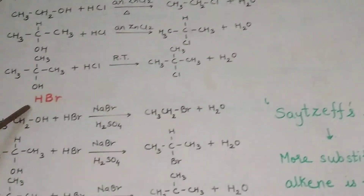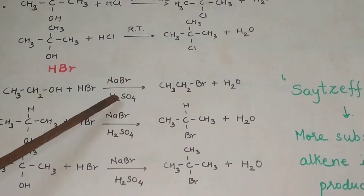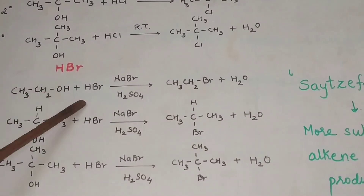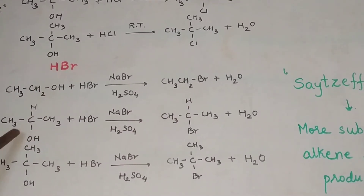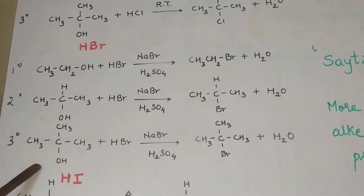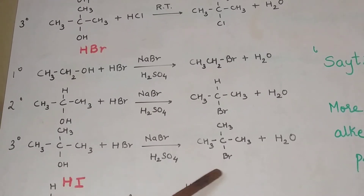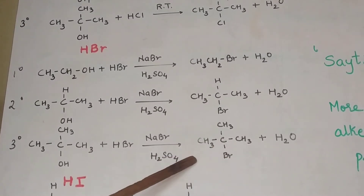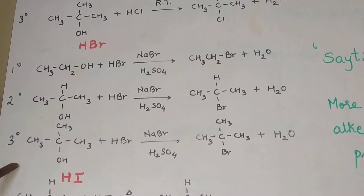In reaction with HBr, you require NaBr and H2SO4, so on the arrow you will write NaBr and H2SO4 every time. For a primary alcohol — ethanol with HBr — OH gets replaced by Br. For a secondary alcohol — propane-2-ol — OH gets replaced by Br. For a tertiary alcohol — 2-methylpropan-2-ol — treated with HBr, OH is replaced by Br to give 2-bromo-2-methylpropane. These are substitution reactions taking place.